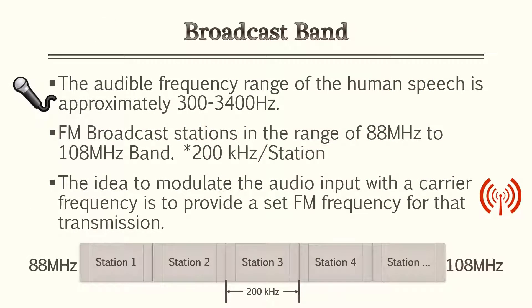Let's go over the basic fundamentals. The audio frequency range of human speech is approximately 300 to 3,400 hertz. FM broadcast stations operate in the range of 88 megahertz to 108 megahertz, which comes out to approximately 200 kilohertz per station. Same as amplitude modulation, the idea to modulate the audio signal with a carrier frequency is to provide a set FM frequency for that transmission — in other words, that's the address for each station.